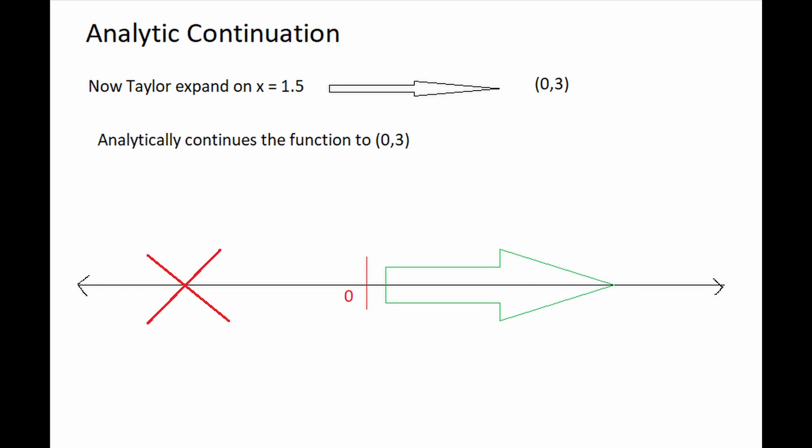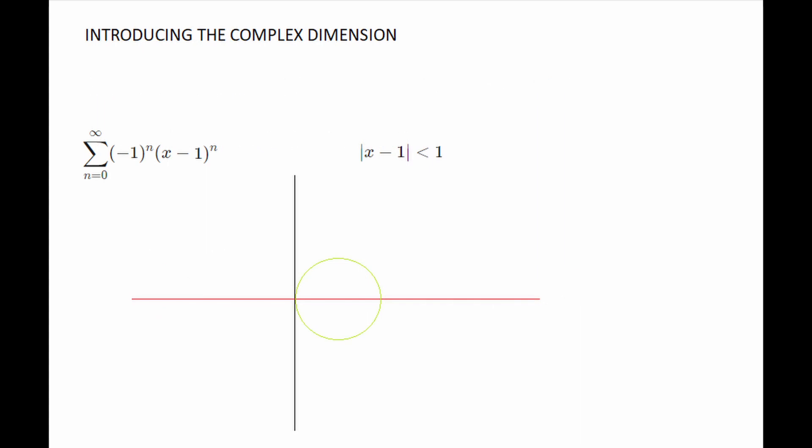To circumvent this problem, we introduce the complex dimension. This works because the Taylor series, or any power series in general, makes perfect sense when x is complex. Now going back to the original Taylor series, when we say modulus of x minus 1 is less than 1, it means a disc of radius 1 centered at x equals 1 on the complex plane. The radius of convergence can literally be thought of as a disc of radius 1. This phenomenon holds true.